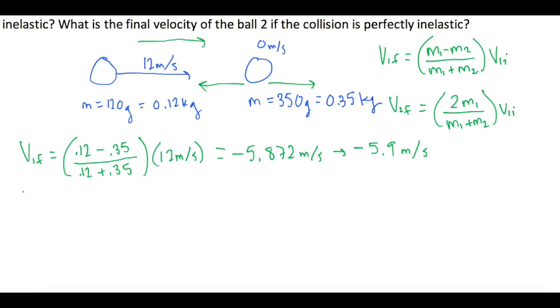Now v2 final is 2 times m1, which is 0.12, divided by 0.12 plus 0.35, times again by 12 meters per second. That gives us a final velocity of 6.128 meters per second, rounded for Mastering Physics is 6.1 meters per second.